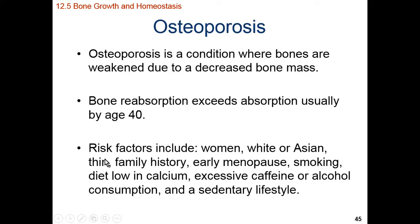Many of these risk factors can be addressed. Gender, ethnicity, family history, and early menopause are largely beyond individual control. But lifestyle factors — like smoking, dietary choices, beverage choices, and physical activity levels — are much easier to control. So if you're worried about osteoporosis later in life, you can get up, start moving your body, and stress your bones so they increase their density. Increase your calcium and vitamin D consumption, cut back on caffeine and alcohol, and stop smoking. That will help increase your bone density so you don't end up with very porous, weak bones more prone to fracture.